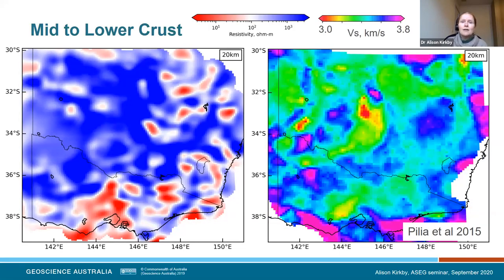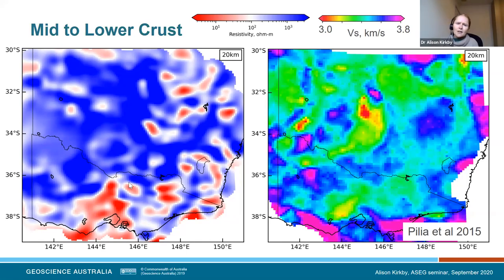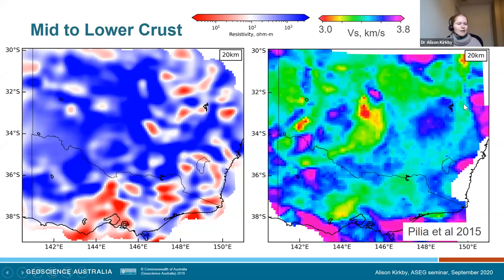At 20 kilometres depth, overlaying the VS model — to my eye I can see some evidence for a northeast trend in the resistivity model. There are some areas where that correlates with the VS model, for example in southern and central Victoria, and a northeast trend in the northeast part of the model that also seems to be reflected in the VS model.